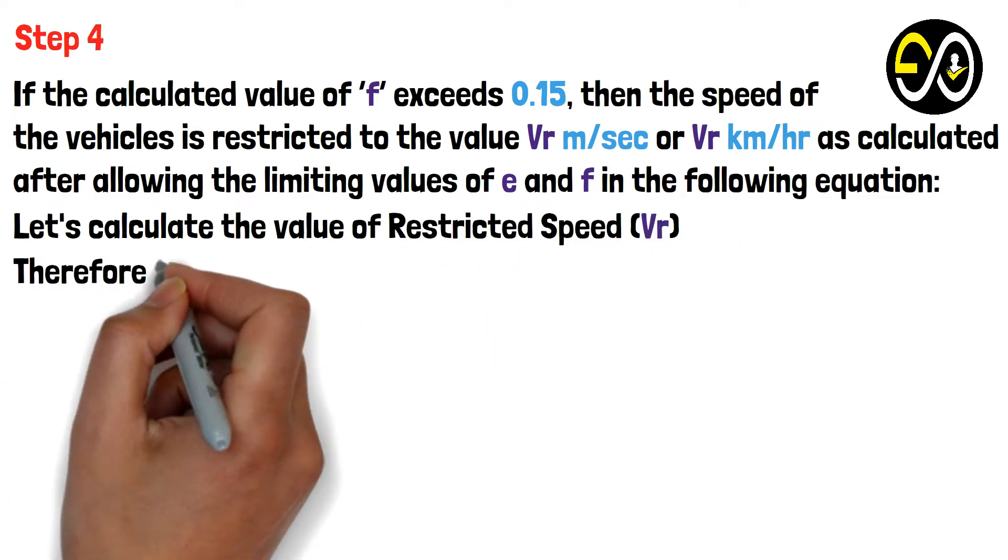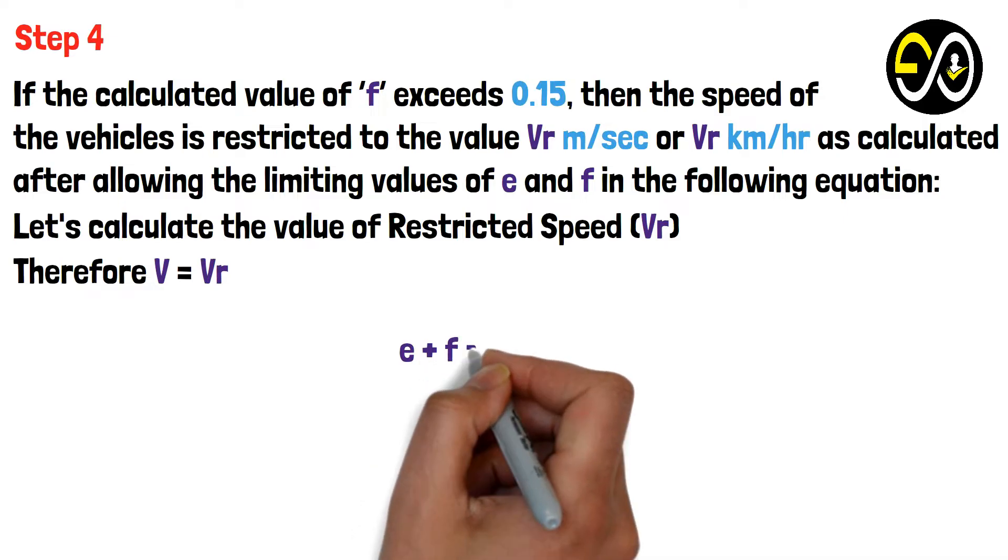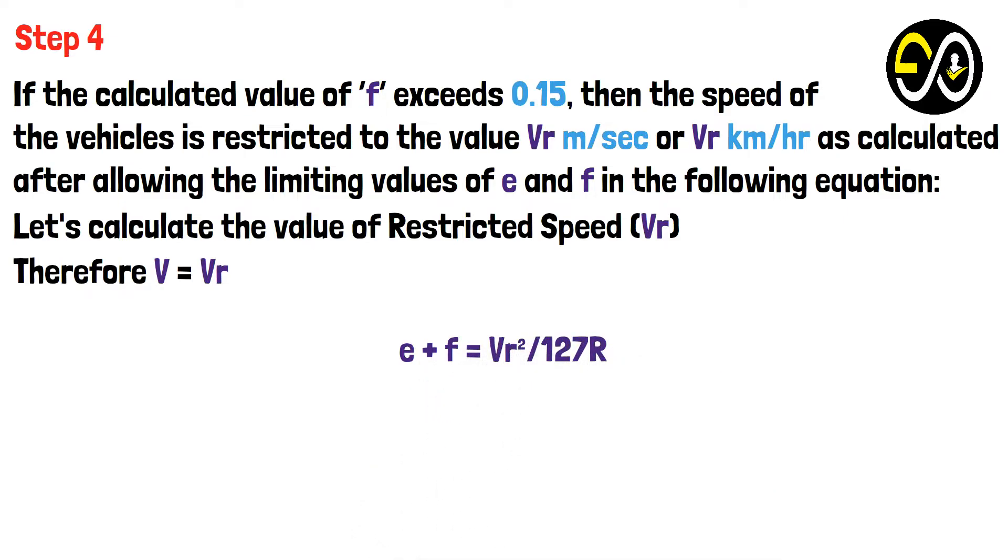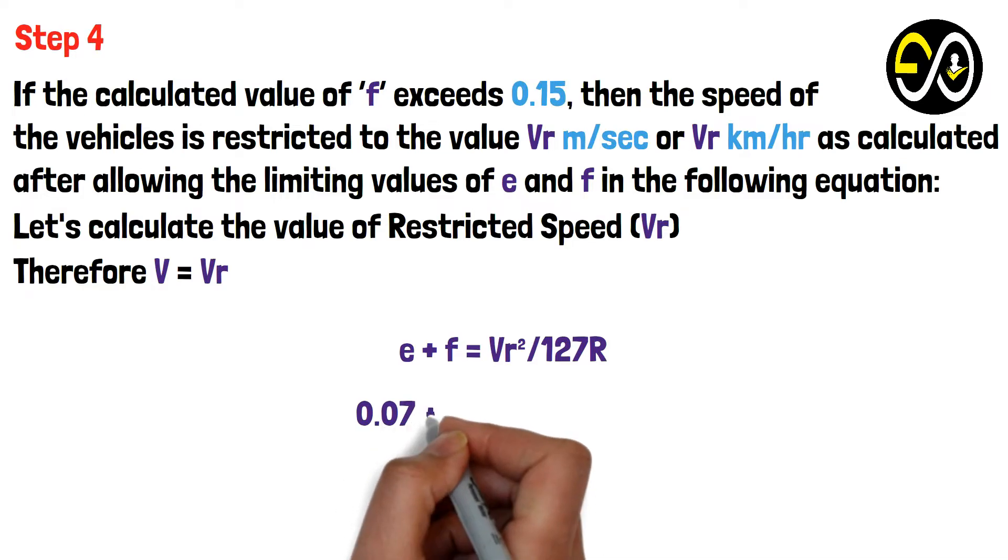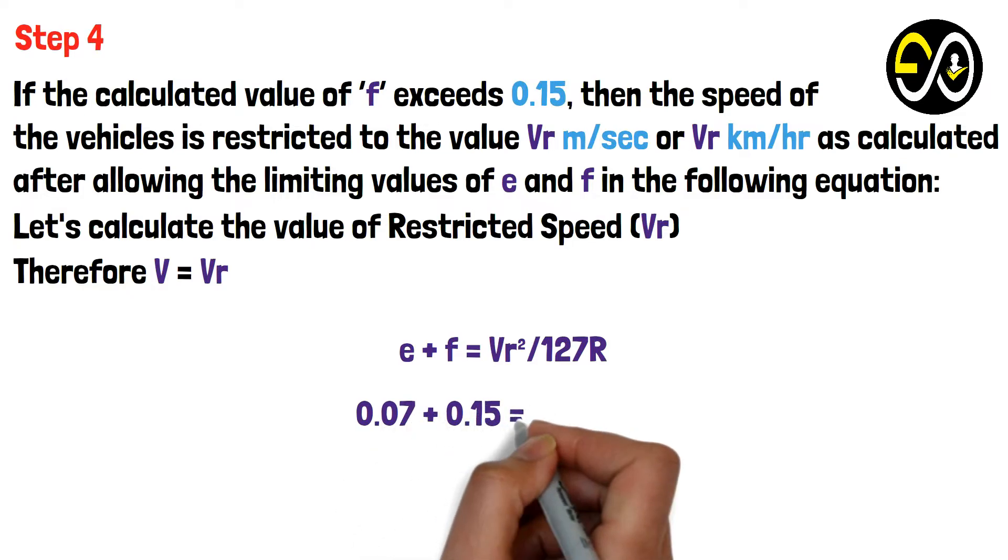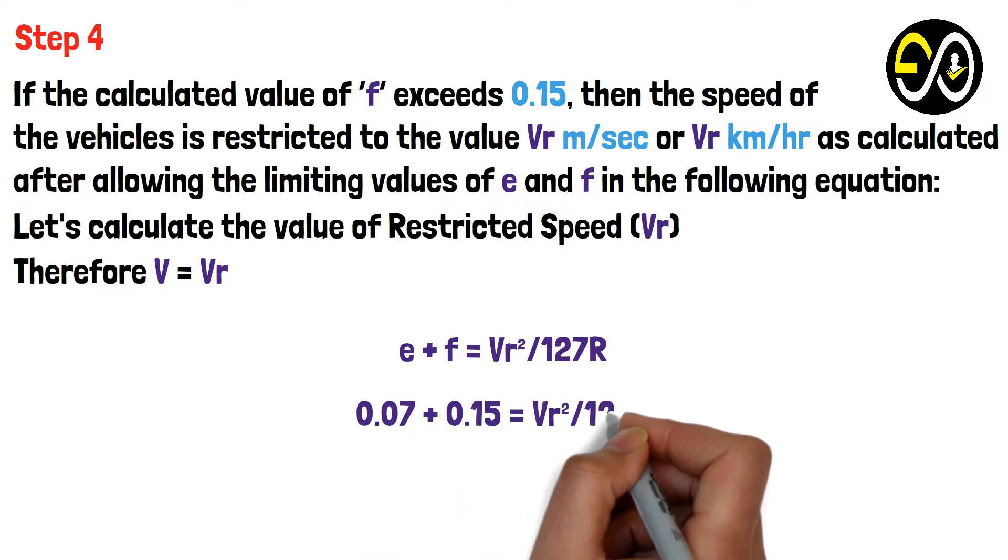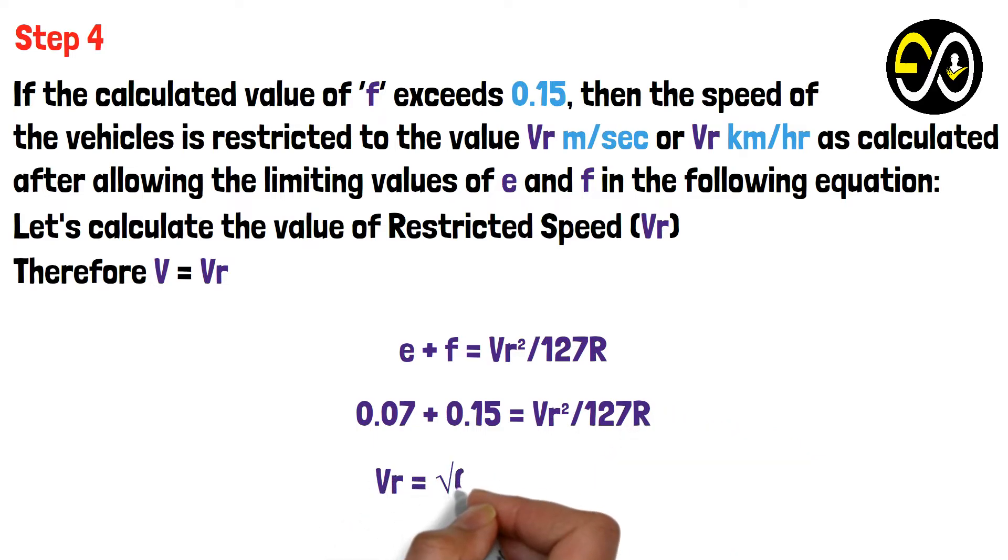Therefore, V = Vr. e + f = V²/127R. 0.07 + 0.15 = Vr²/127R. Vr = √(127R × 0.22).